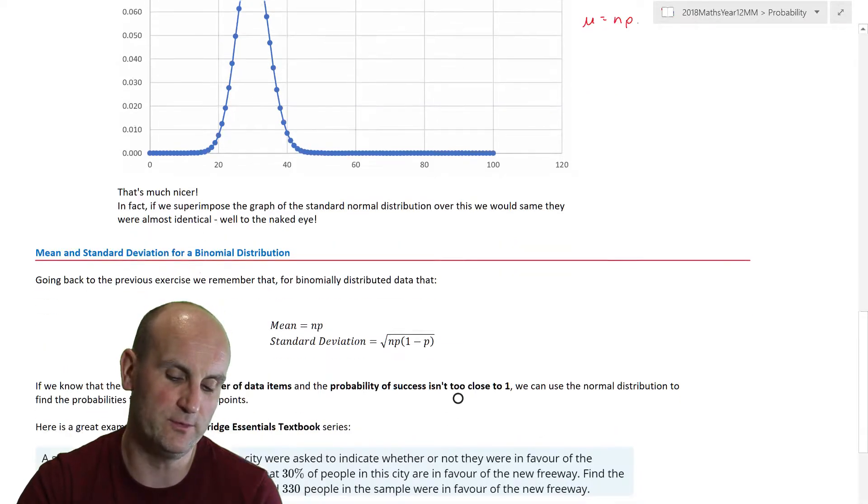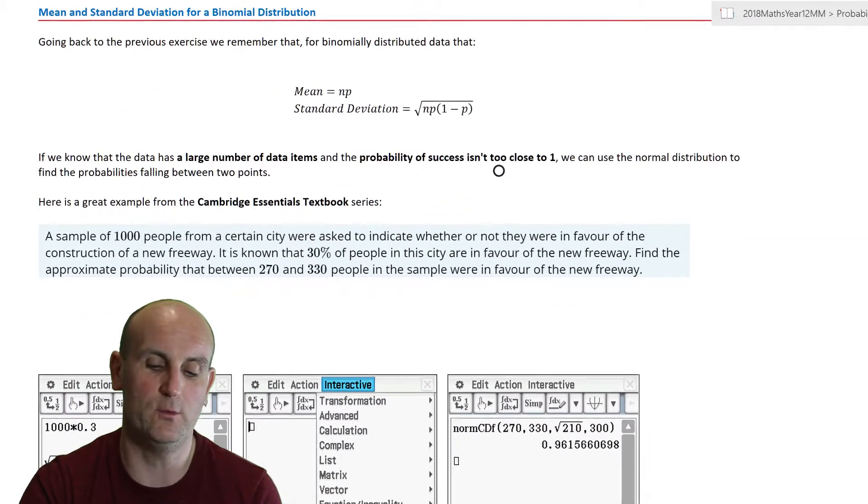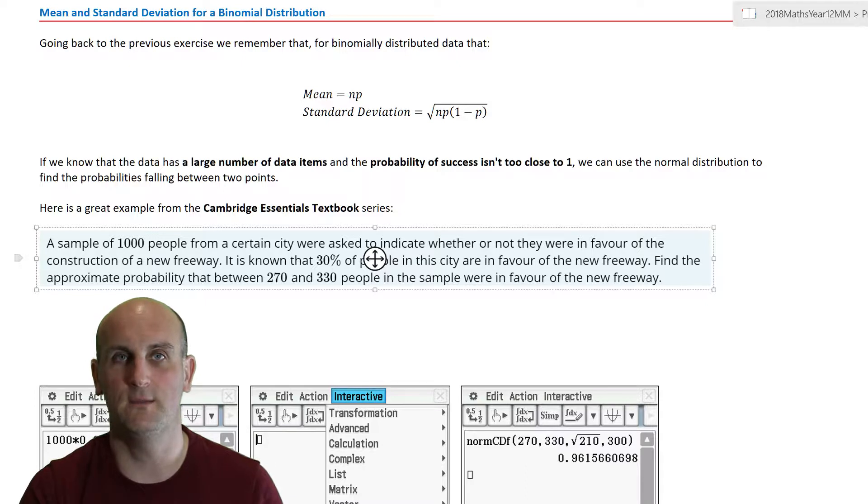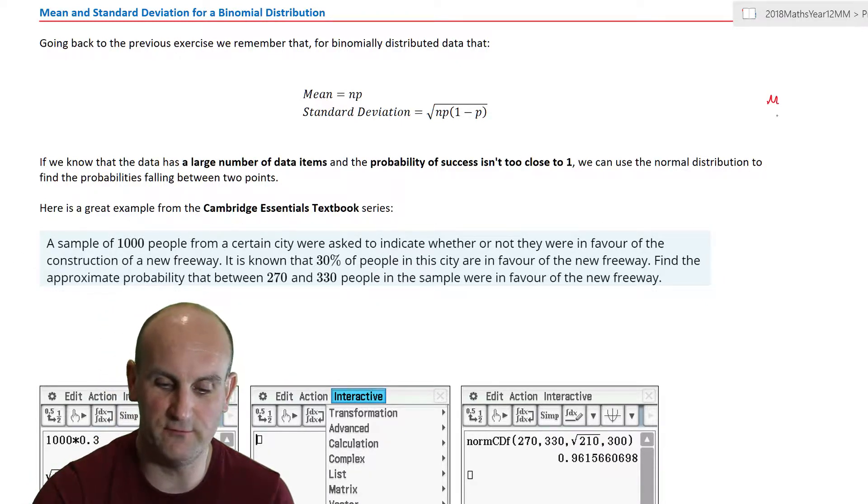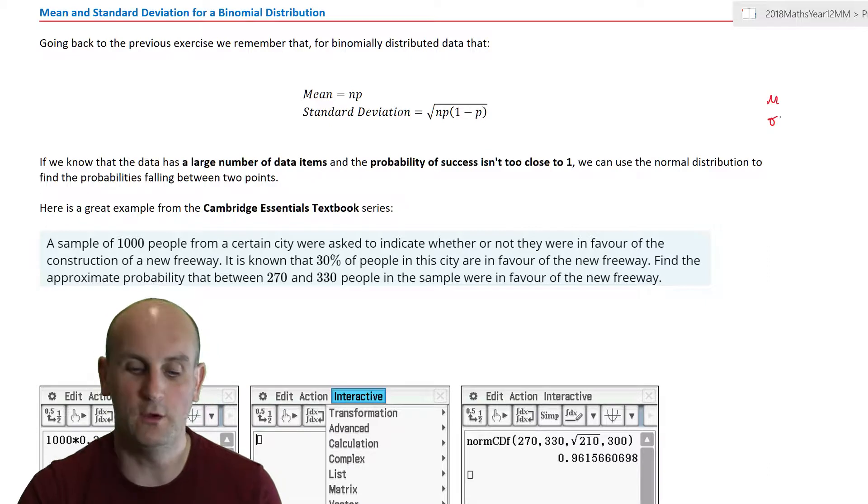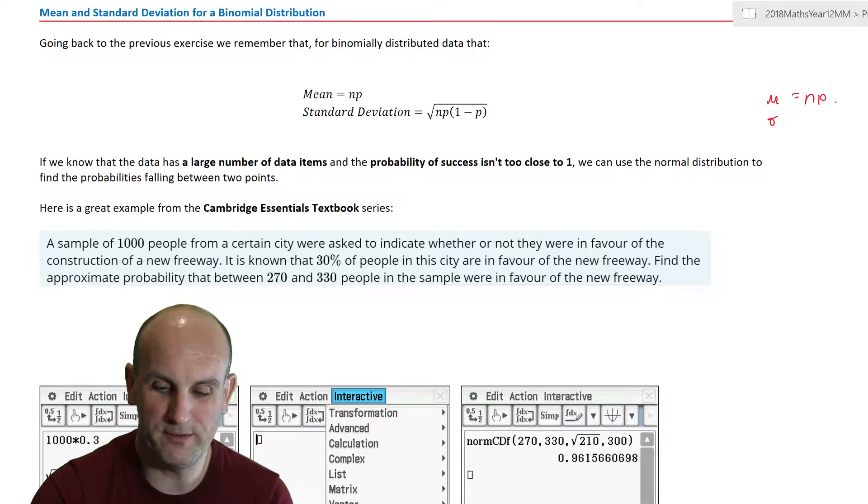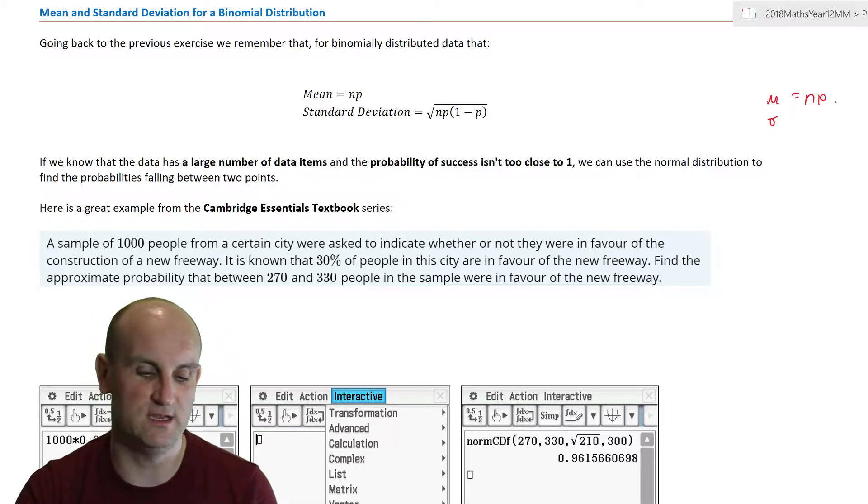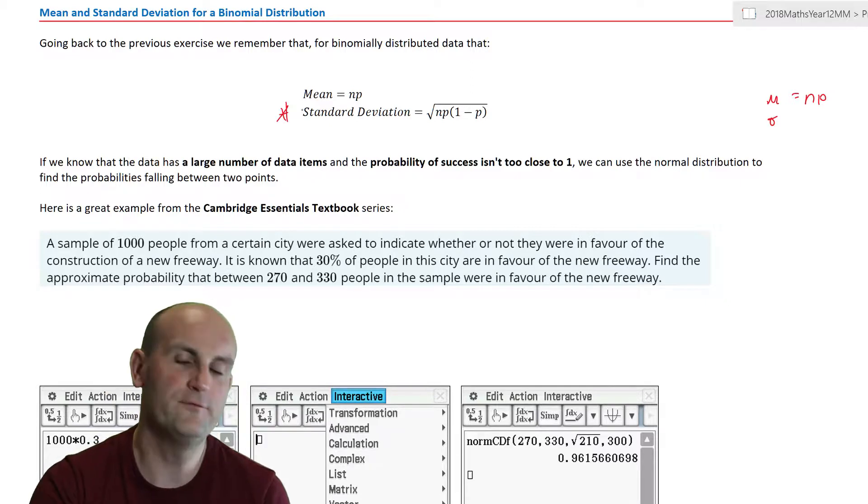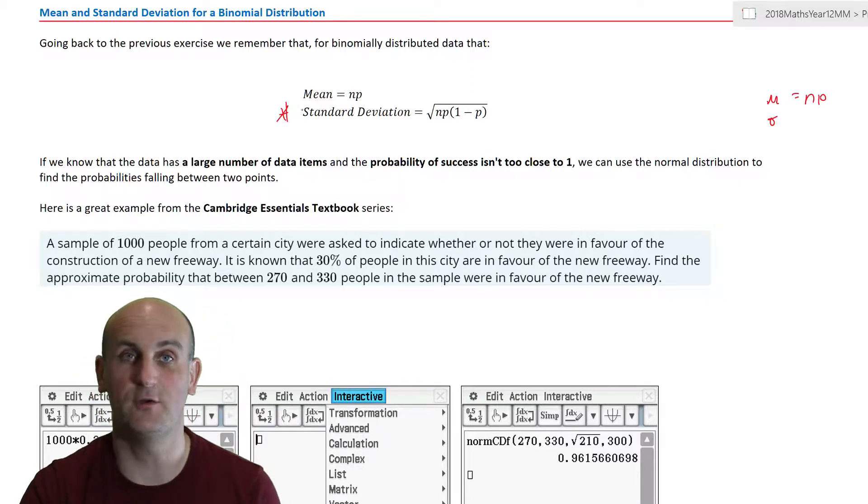Now again, what is the binomial distribution? If you remember, it is something where there are only two outcomes, a success and a failure. So to be able to use the normal distribution, all we really need to know, if you remember, is our value of mu and sigma. We already know that mu is given by n, P. So how do we find the value of sigma?